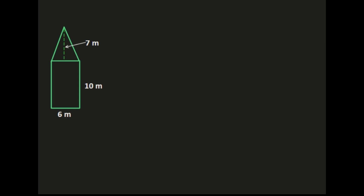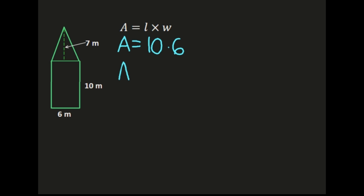Let's start with the rectangle. Our formula for the area of a rectangle is area equals length times width. I'm going to look at the rectangular portion of this figure and substitute my length and width into the formula. The length of the rectangle is 10, so I'll substitute 10 in for L, and the width of the rectangle is 6, so I'll substitute 6 for W. Now I can solve for the area of the rectangle: 10 times 6, so the area of the rectangle is 60.